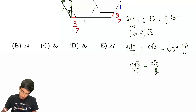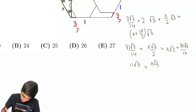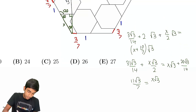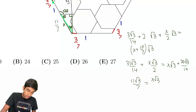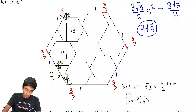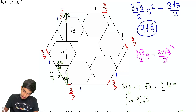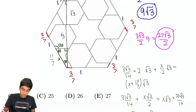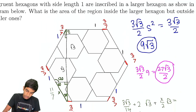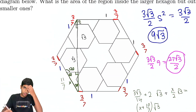We cancel the √3 and solve: 11/14 = x/2, so x = 11/7. Therefore the total side length of the large hexagon is 11/7 + 3/7 + 1 = 3. The area of the big hexagon is (3√3/2)·3² = 27√3/2. Subtracting the six smaller hexagons: 27√3/2 − 9√3 = 9√3/2, which is the answer.